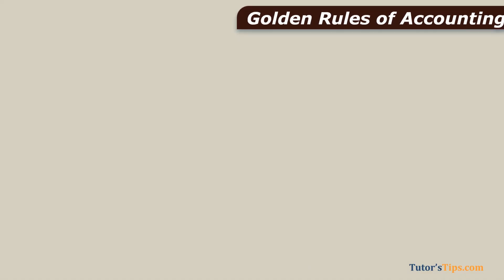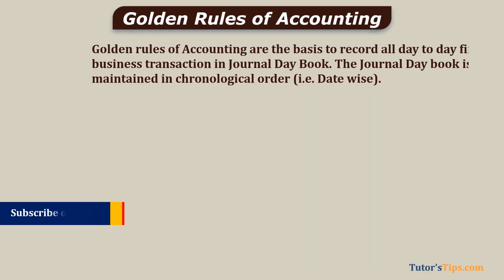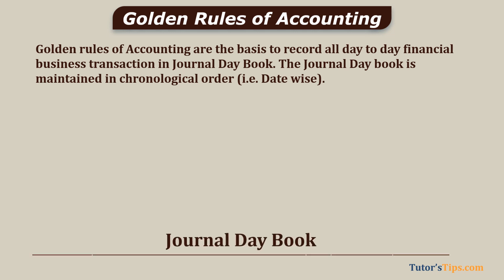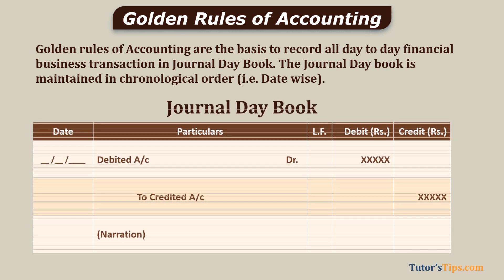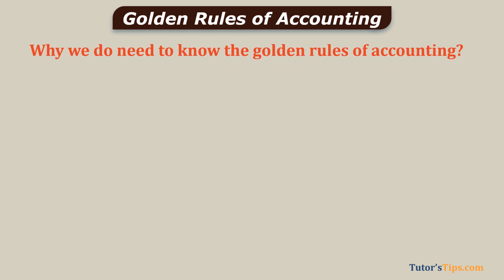Golden Rules of Accounting are the basis of recording all day-to-day financial business transactions in the Journal Day Book. The Journal Day Book is maintained in chronological order, that is date-wise. The format of the Journal Day Book is shown here. Now the question is: why do we need to know the Golden Rules of Accounting?